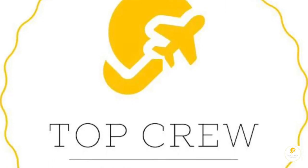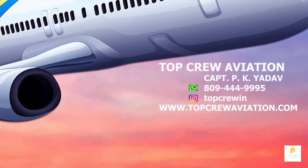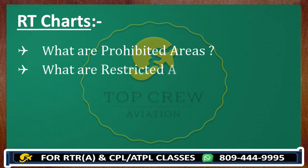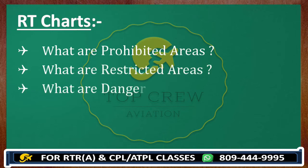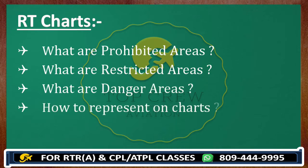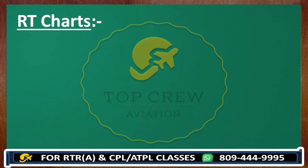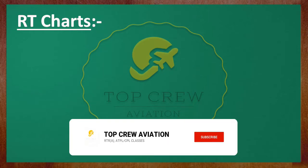Welcome to Top Crew Aviation, this is Captain P. Kiyadav. Now guys, we would discuss what are the prohibited areas, what are the restricted areas and what are the danger areas, and how to represent them on charts and how we can identify them. On charts, you would find it is already represented, but we should know both things: how to represent them on charts and how to identify them on charts.